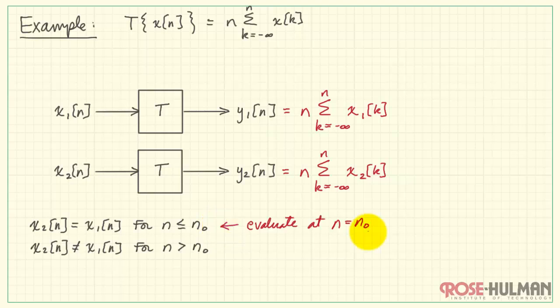Now, we want to evaluate these two outputs at n equals n naught. And things will be a little easier if we write out a few terms.